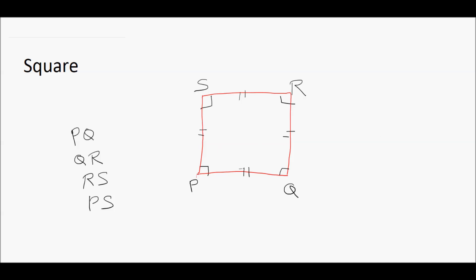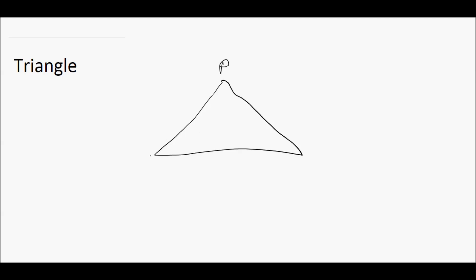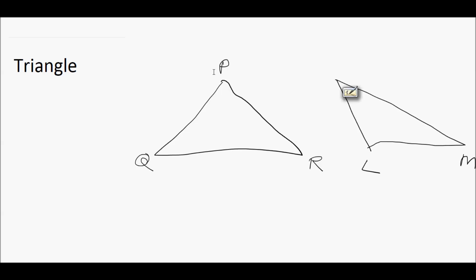Now let's move to the last part, which is the triangle. Let me draw a triangle. I'll name this triangle P, Q, and R. All sides of a triangle may be equal or sometimes not equal. Here is another triangle named L, M, and N. A triangle has three vertices — for example, P, Q, R here and L, M, N here.